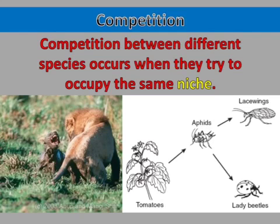Competition between different species occurs when they try to occupy the same niche. A niche describes the way that an organism uses resources and interacts with the environment. If species have overlapping niches, then they are trying to use the same set of resources.